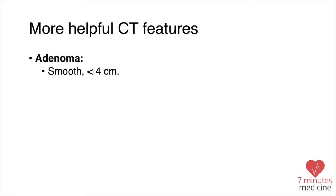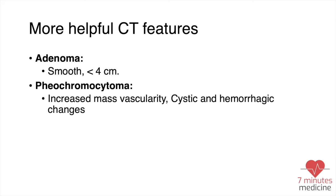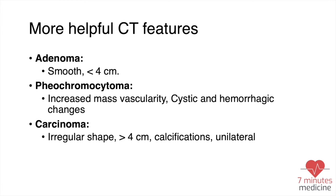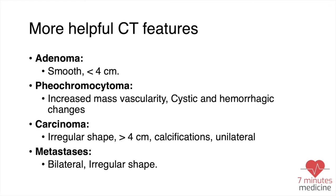Other features helpful in differentiating the type of mass: if it's smooth, it is most likely adenoma, especially if it's less than four centimeters. If there is increased vascularity, cystic and hemorrhagic changes, this goes more with pheochromocytoma. If it's irregular in shape, more than four centimeters, and has calcification, this goes more with carcinoma. If it's bilateral and irregular, this goes with metastasis.